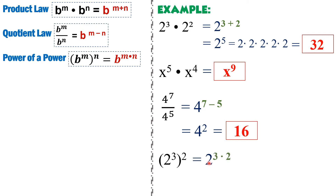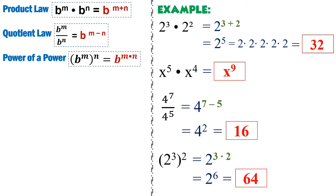Keep the base as 2 and multiply 3 times 2, which gives us 6. Therefore it will be 2 raised to 6. And 2 raised to 6 means multiplying 2 by itself 6 times: 2 times 2 is 4, times 2 is 8, times 2 is 16, times 2 is 32, and times 2 is 64. So the answer is positive 64.